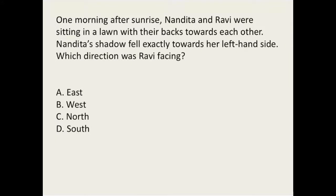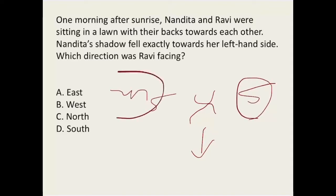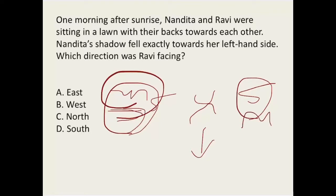One morning after sunrise, Nandita and Ravi were sitting in a lawn with their backs towards each other. Nandita's shadow falls exactly towards her left. Draw a diagram with both facing opposite directions. The shadow always falls opposite to the sun, so if Nandita's shadow is to her left, the sun is to her right — that means east is in that direction. Once you find east, other directions follow easily. Since Ravi's back is to Nandita, Ravi is facing towards south.